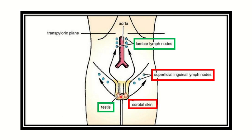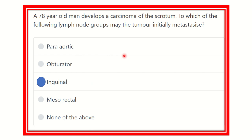In another picture of the same type, we can also see this is the scrotum and inside the scrotum there are the testes. From the scrotum, the lymph drains into the superficial inguinal lymph node group. On the other hand, the testes — which lie just inside the scrotal skin — their lymphatic drainage is in the abdomen around the aorta, which is the para-aortic or lumbar para-aortic lymph node.